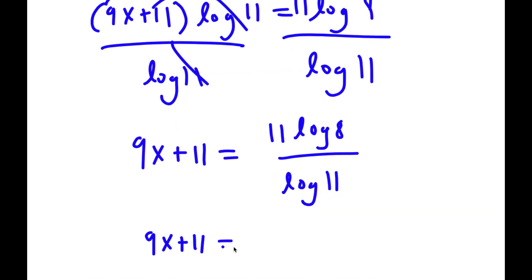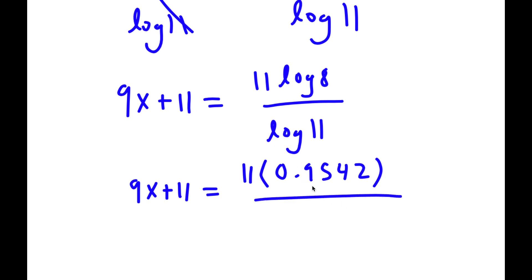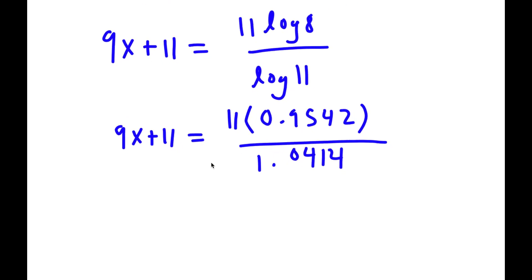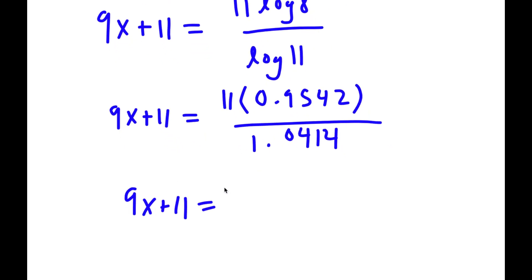Now log 9 is equal to 0.9542 and log 11 is equal to 1.0414. So 0.9542 divided by 1.0414 equals 0.9163.